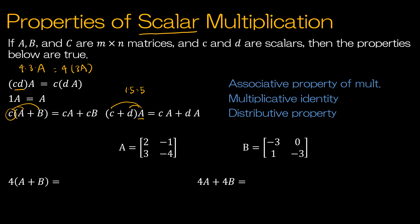4 times (A plus B) is equal to 4A plus 4B. So in this case, I would take 4 and then add A and B together: 2 plus negative 3 is negative 1, negative 1 plus 0 is negative 1, 3 plus 1 is 4, negative 4 plus negative 3 is negative 7. Then I would multiply everything by 4: negative 4, negative 4, 16, negative 28.